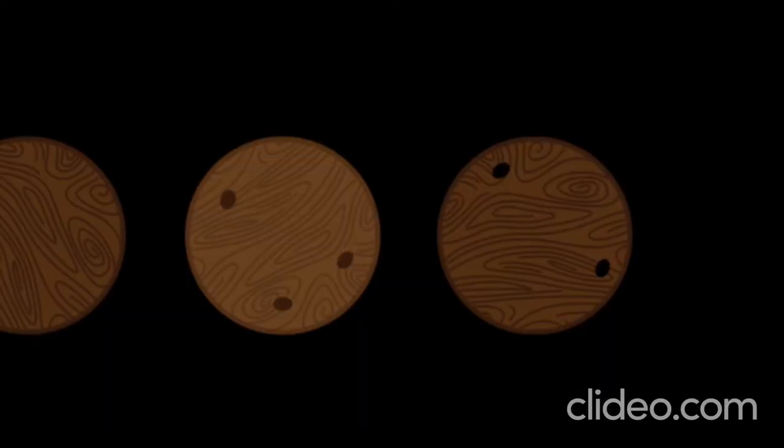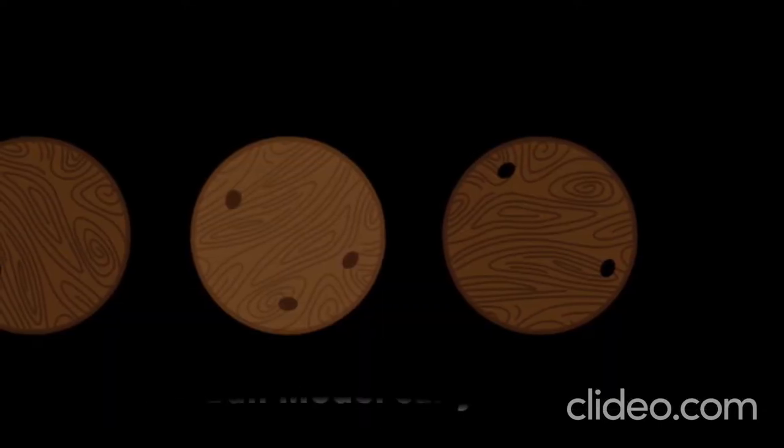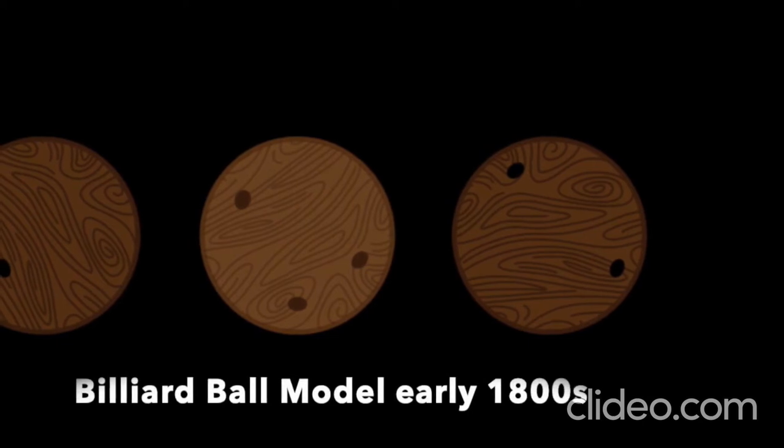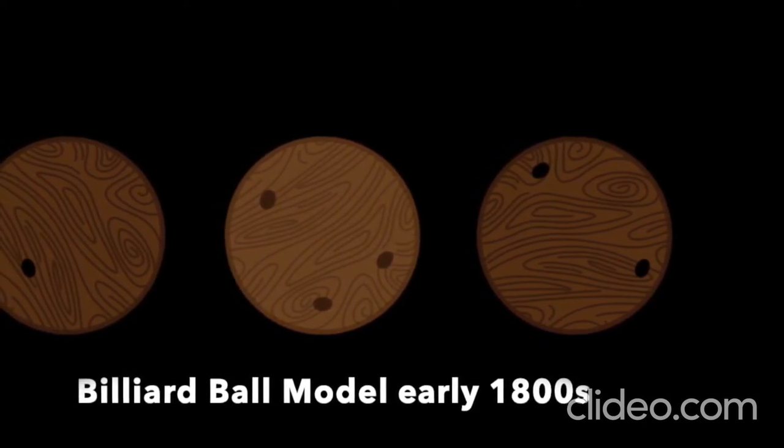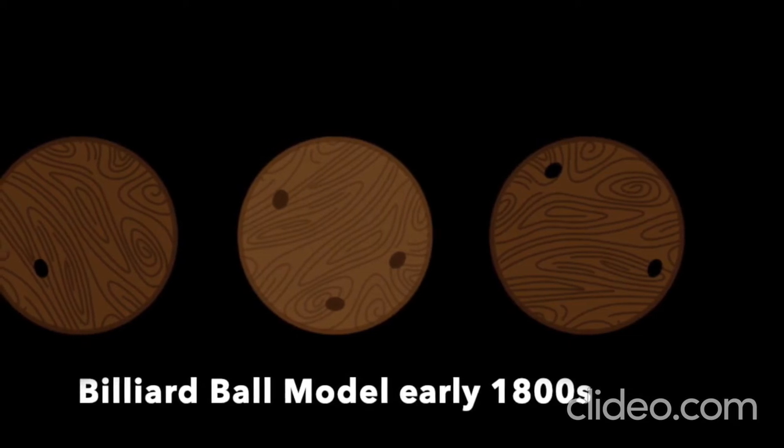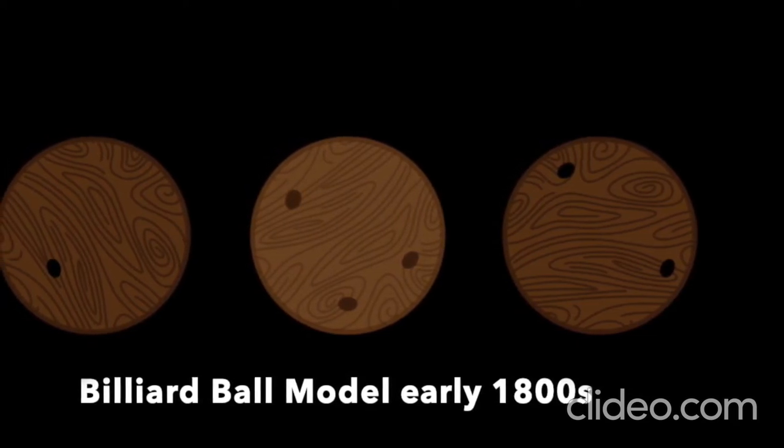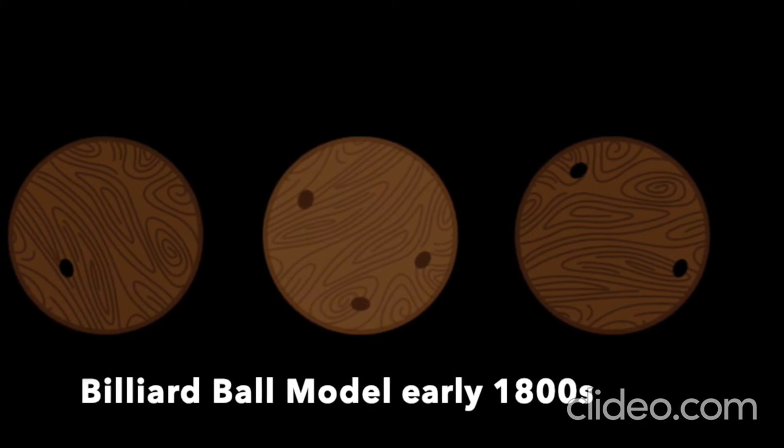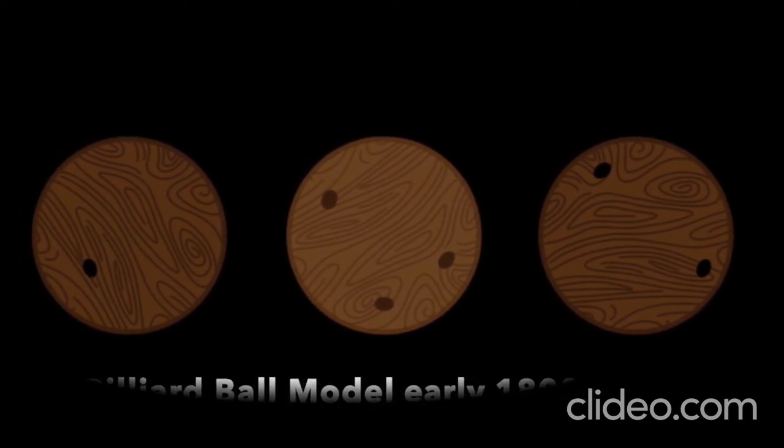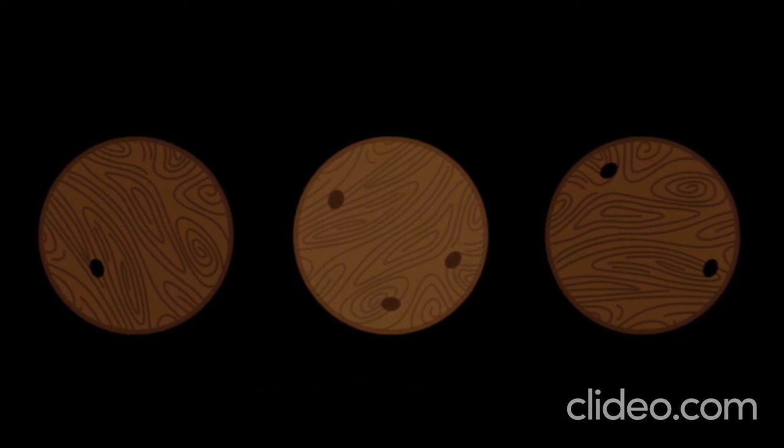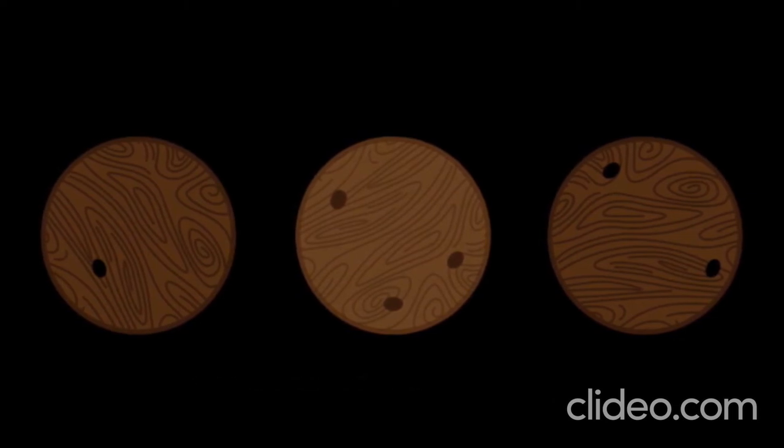Dalton's model was called the billiard-ball model. Because Dalton thought atoms were the smallest particle of matter, he envisioned them as solid, hard spheres, like billiard pool balls. So he used wooden balls to model them. By relating atoms to the measurable property of mass, Dalton turned Democritus' idea into a scientific theory that could be tested by experiment.